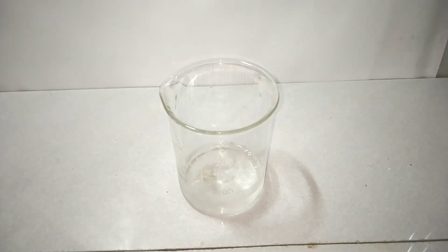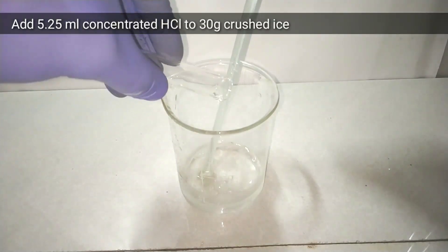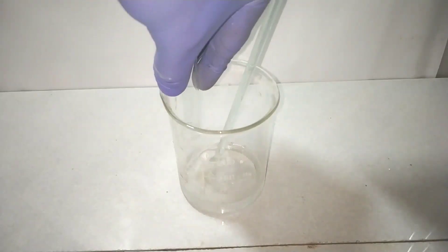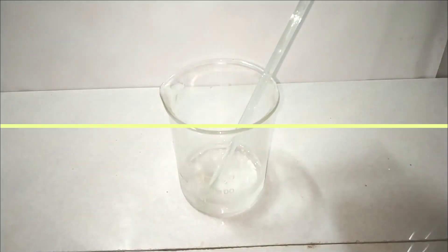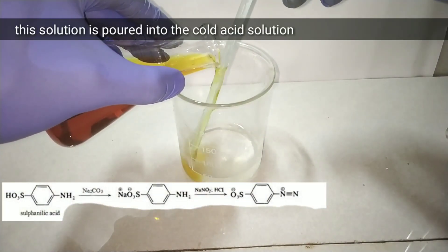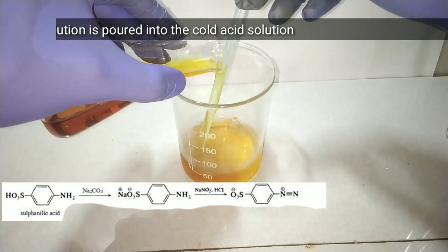Now we are making another solution by adding 5.25 ml of concentrated hydrochloric acid into 30 grams of crushed ice. After cooling, we add that previously made solution into the cold acid solution.